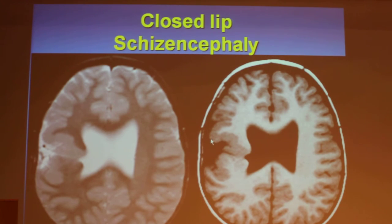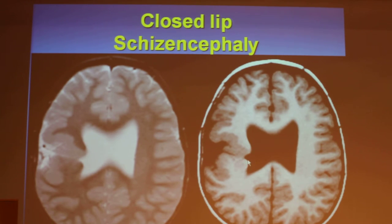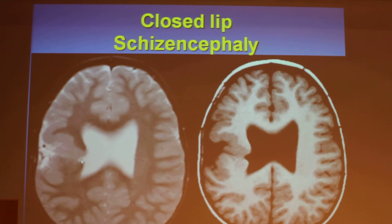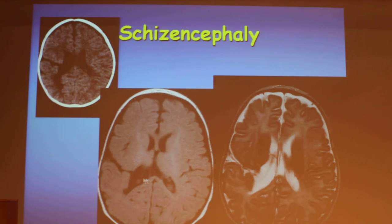When it is closed lip, we have to look for signs because sometimes we can see it and sometimes we just have clues. One of the clues to look for is the ventricular nipple — an outpouching from the lateral aspect of the lateral ventricle that leads towards the cleft. Sometimes the cleft is closed, but if we look closely, we see that it is lined on both sides with gray matter, which is of course easier to see if the cleft is open.